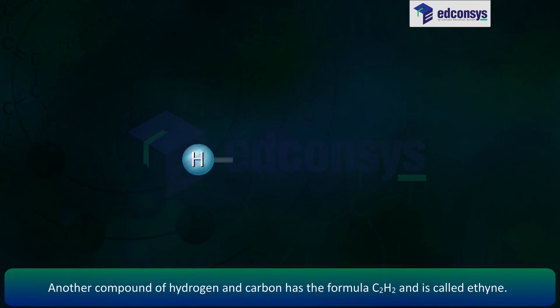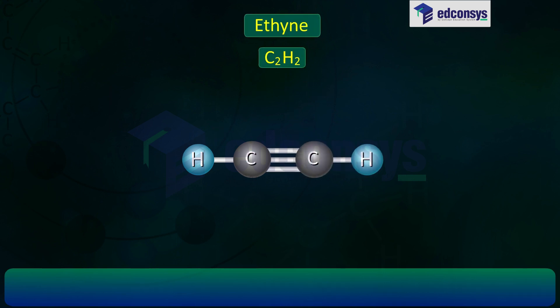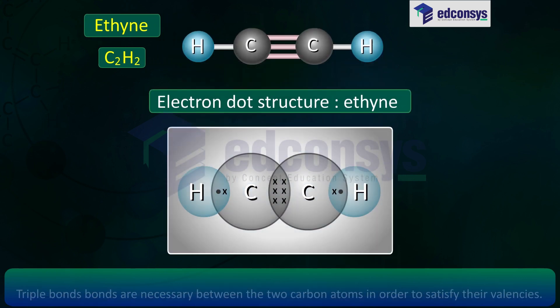Another compound of hydrogen and carbon has the formula C2H2 and is called ethyne. Draw the electron dot structure for ethyne.